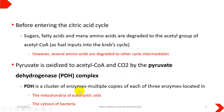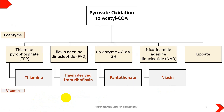Pyruvate dehydrogenase is a cluster of multiple copies of three enzymes located in the mitochondria of eukaryotic cells, while it is present in the cytosol of bacteria. This is the difference between eukaryotic and prokaryotic cells: in prokaryotes it is present in the cytosol, while in eukaryotes it is present in the mitochondria.